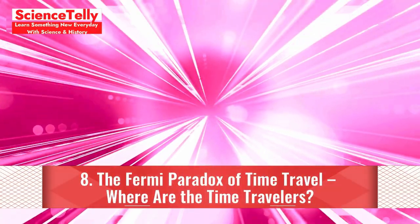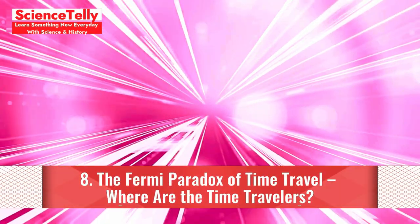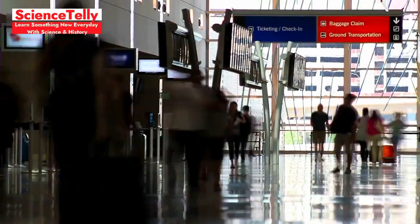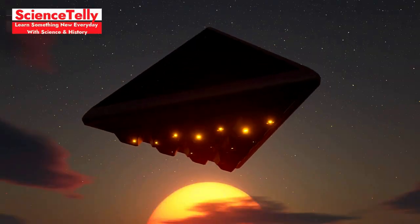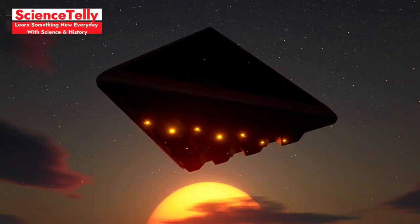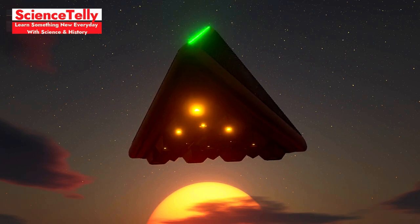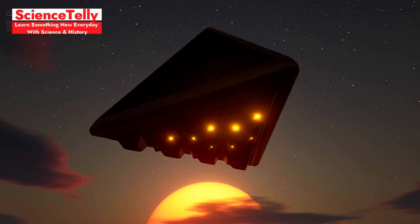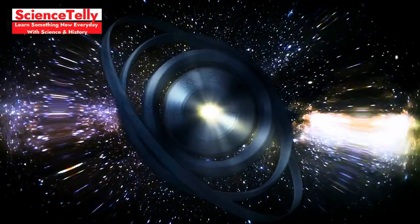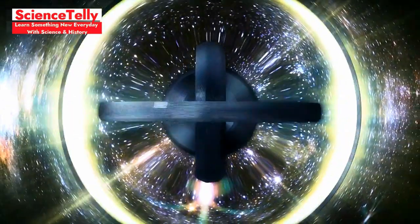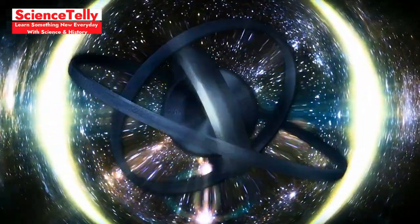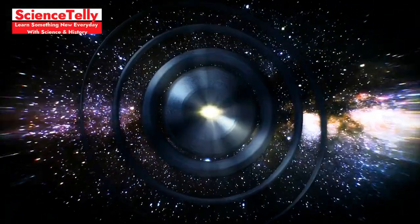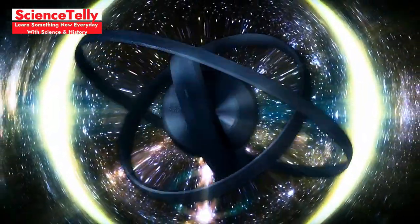Eight, the Fermi paradox of time travel. Where are the time travelers? If time travel is possible, where are all the time travelers from the future? This question, known as the Fermi paradox of time travel, ponders why we haven't encountered time travelers from advanced civilizations. Some scientists think there could be rules. Perhaps time travel only works within certain time periods, or future societies avoid interference. Or maybe time travel has limitations we can't yet comprehend.